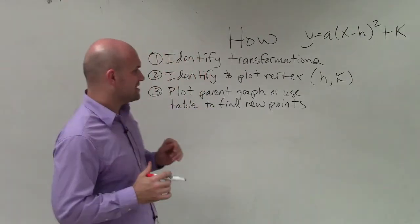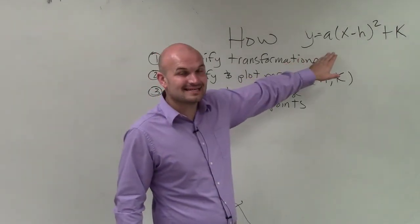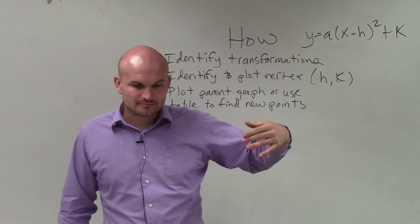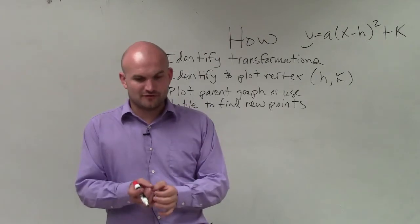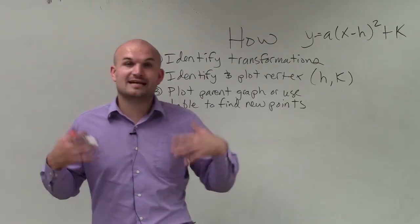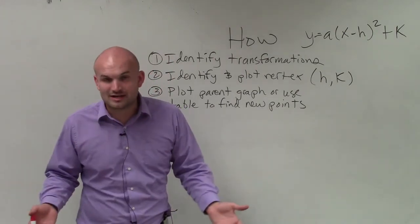Now it does sometimes get a little tricky when A is not one or negative one, and therefore we need to determine what the next points are. To do that, we're usually going to take your vertex and then just choose points to the left or to the right of your vertex, and plug them into a table and evaluate them into your equation.